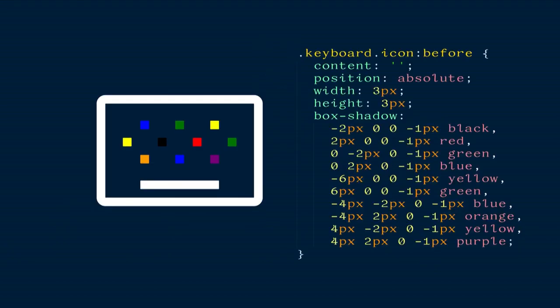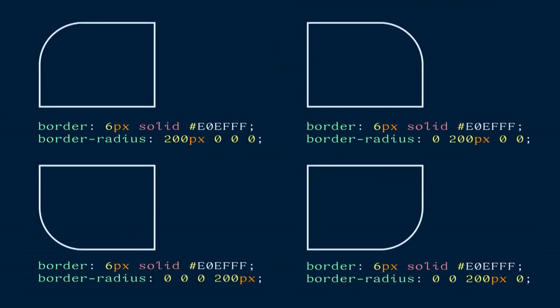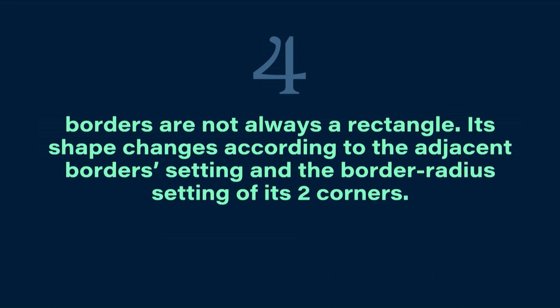We have many, many shadows all in different colors here, and to draw this colorful keyboard. Third thing is that border-radius can be defined individually for each corner, and all be different for each corner. And the fourth thing is borders are not always a rectangle shape.